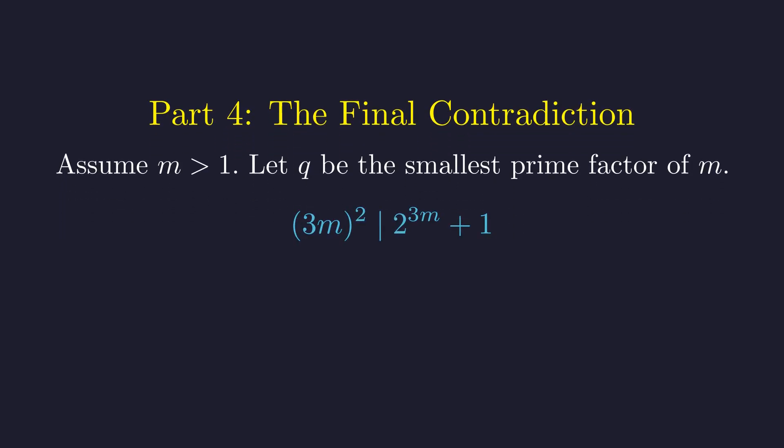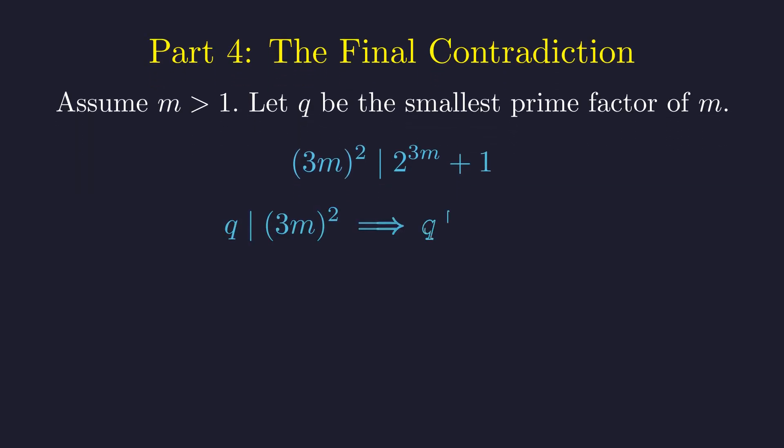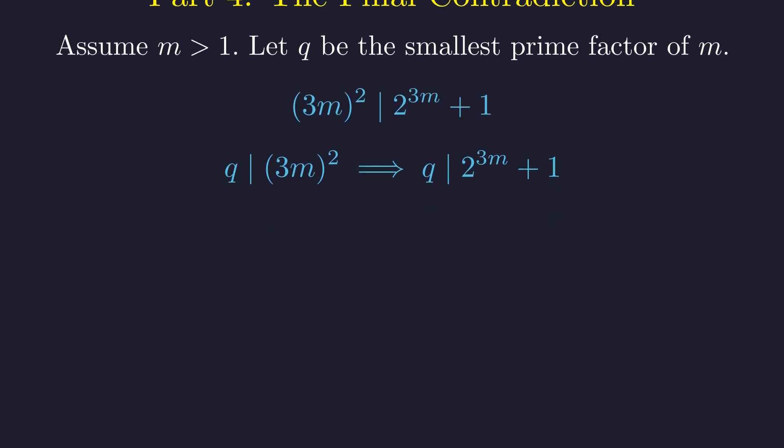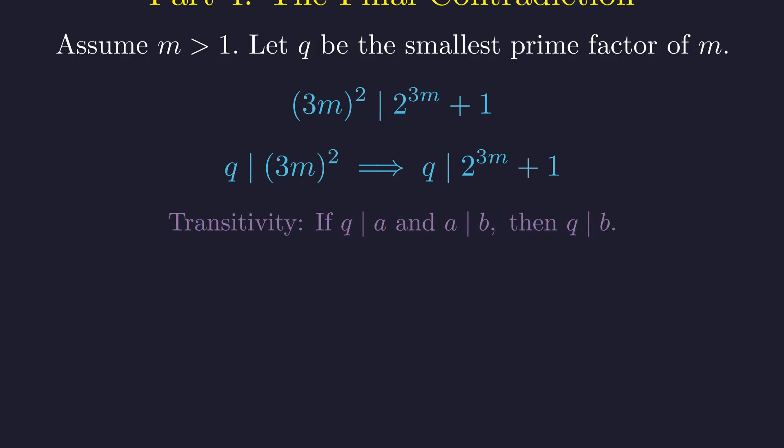Our condition is that n squared divides 2 to the n plus 1. With n equal to 3m, this becomes 3m all squared divides 2 to the power of 3m plus 1. By transitivity of division, if q divides the smaller number, it must also divide the larger one. So q divides 2 to the power of 3m plus 1. This uses the transitivity of divisibility. If q divides a and a divides b, then q divides b. This allows us to pass divisibility from factors to the whole expression.